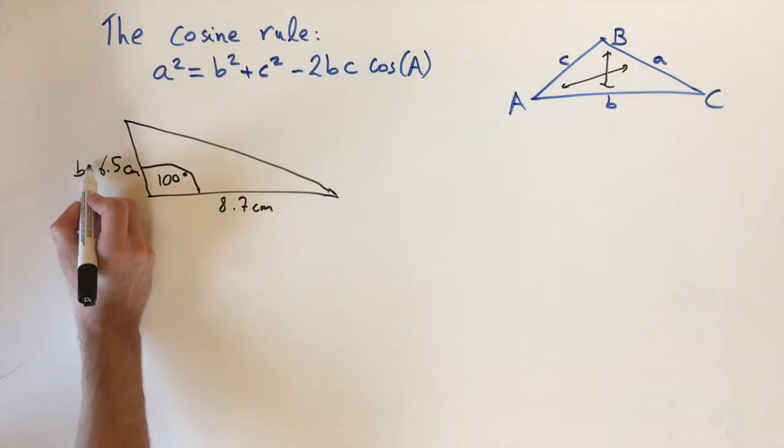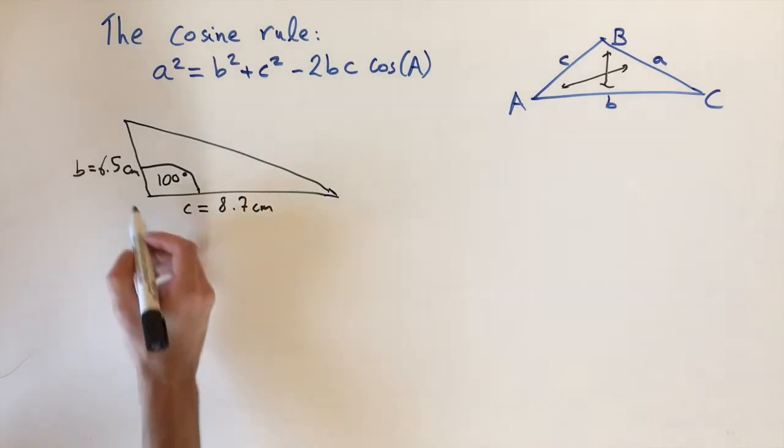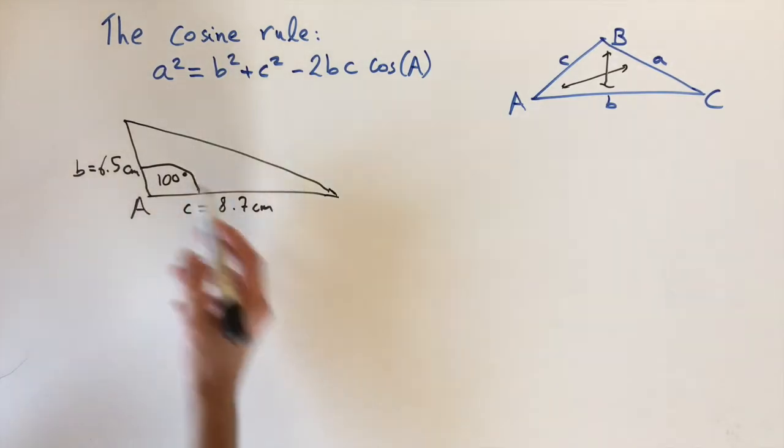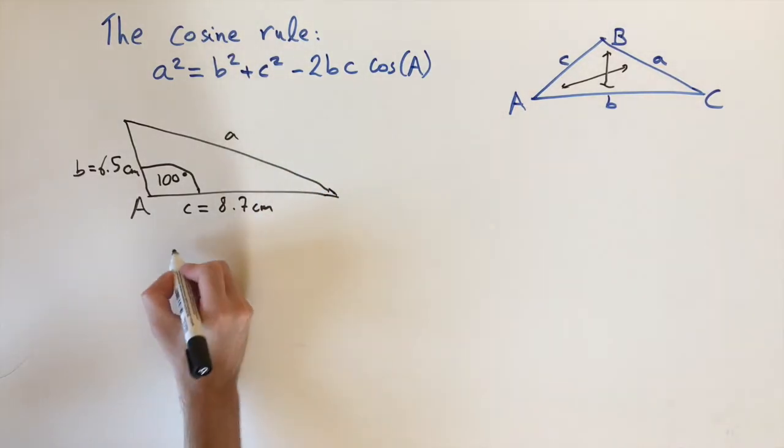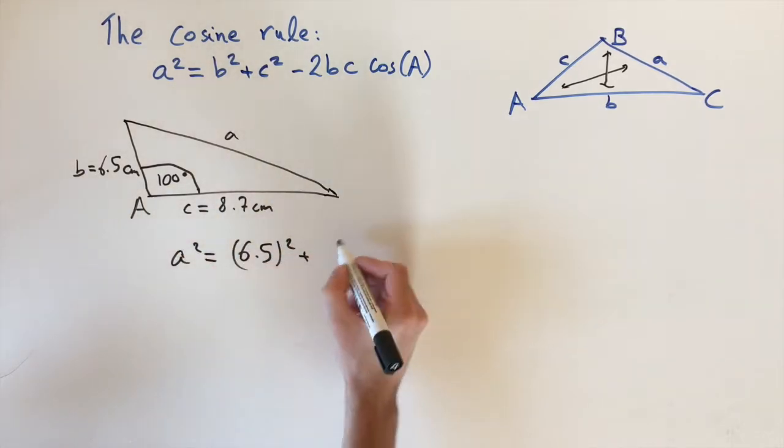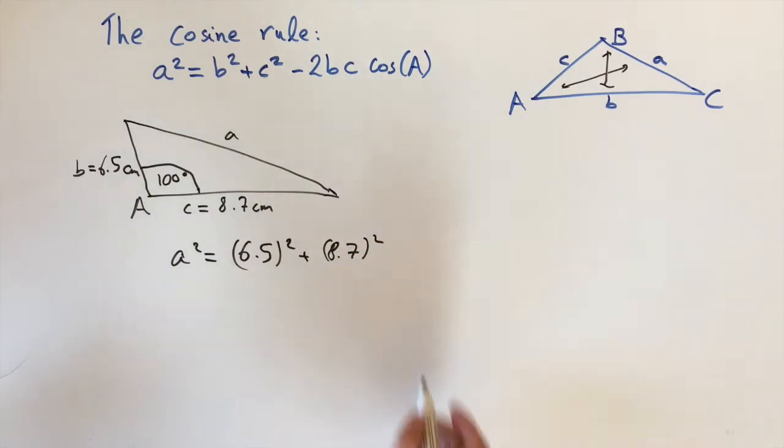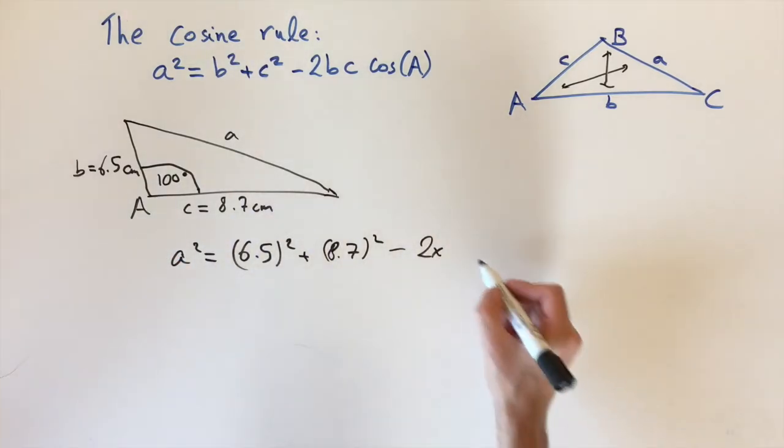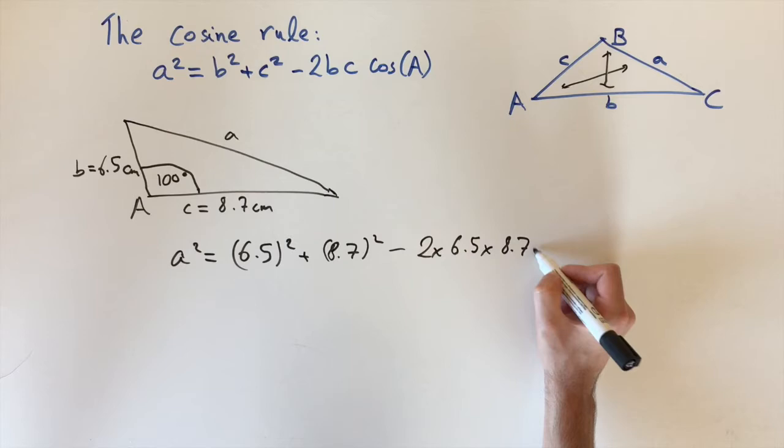I can call this length b and this one c, and we can call this angle capital A. Then we have everything we need to find the missing length, which is little a. If we just plug these numbers into the formula, we have a squared equals b squared, which is 6.5 squared, plus c squared, which is 8.7 squared, and then minus 2 times b times c, so 6.5 times 8.7 times cosine of A.